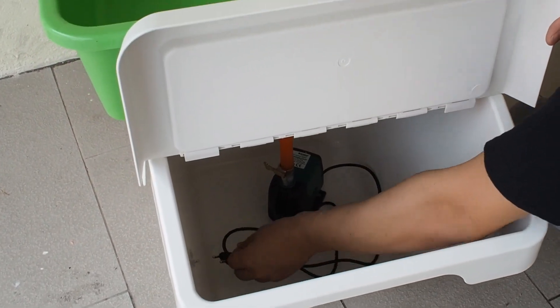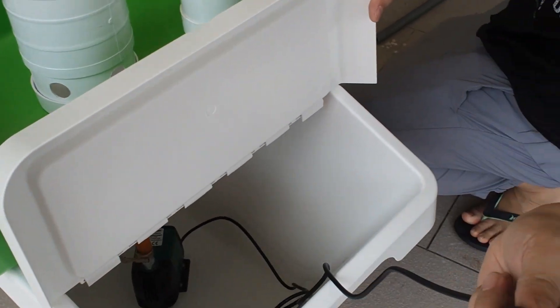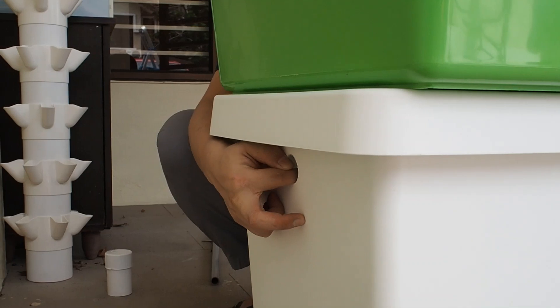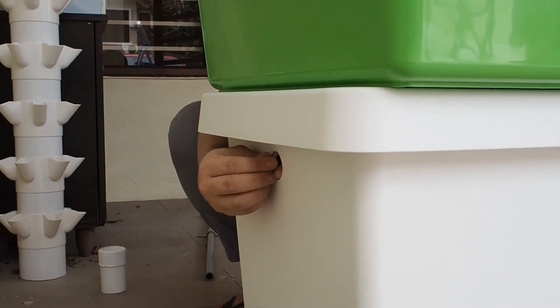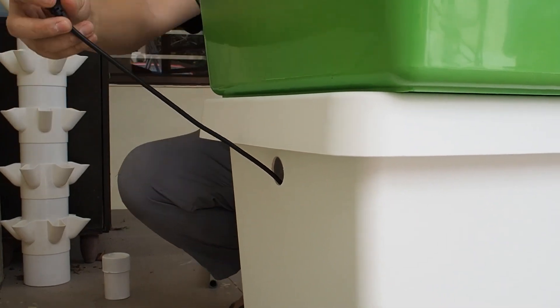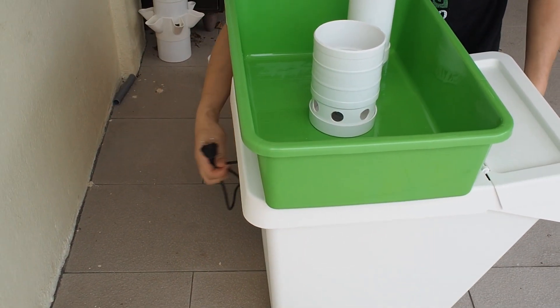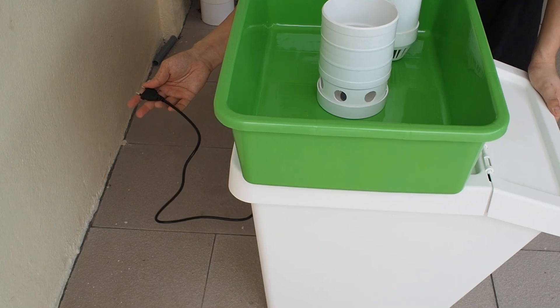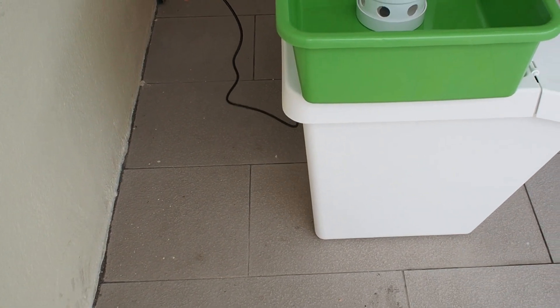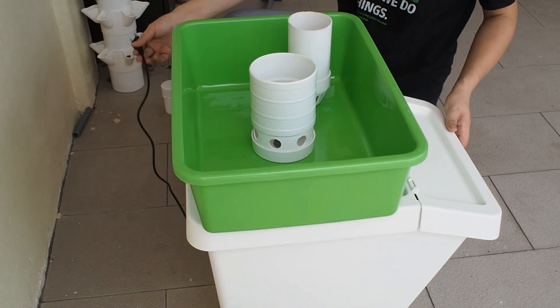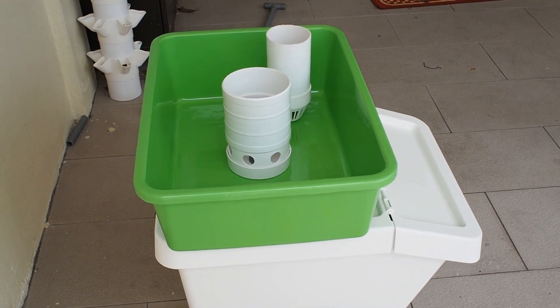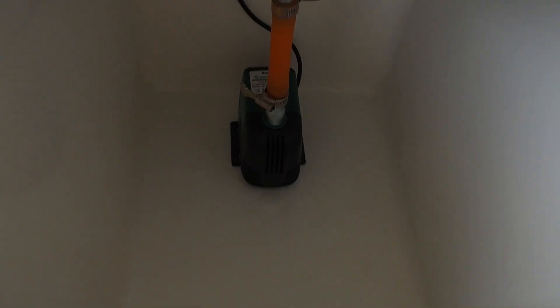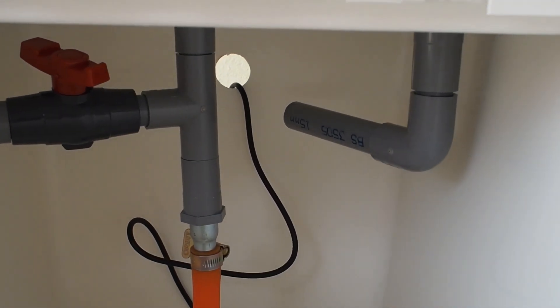The next step is we have to take out this power cord. Pull the power cord out. This has to connect to your power plug. Try to mind that the power plug we recommend is outdoor power plug. You have to install an outdoor power plug, which is the waterproof.